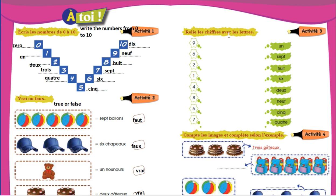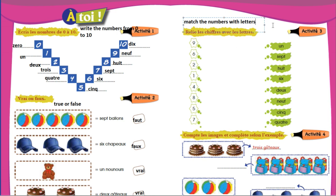Now, reliez les chiffres avec les lettres — it means match the numbers with the letters. So nine — neuf will link to here. Six — six. Deux — deux. Un — un. Like this we will do.